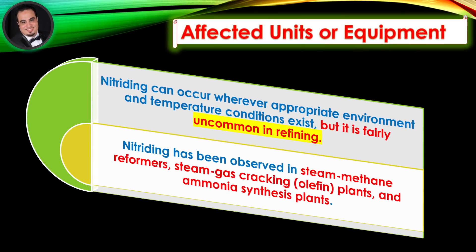Affected units or equipment: Nitriding can occur wherever appropriate environment and temperature conditions exist, but it is fairly uncommon in refining. Nitriding has been observed in steam methane reformers, steam gas cracking olefin plants, and ammonia synthesis plants.